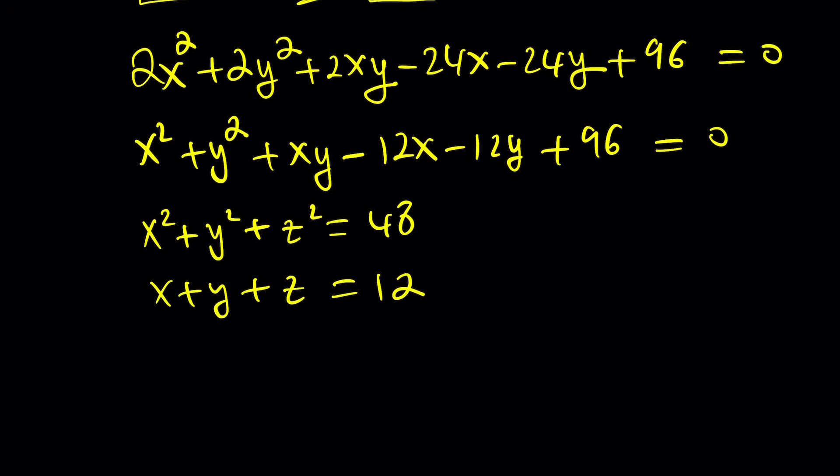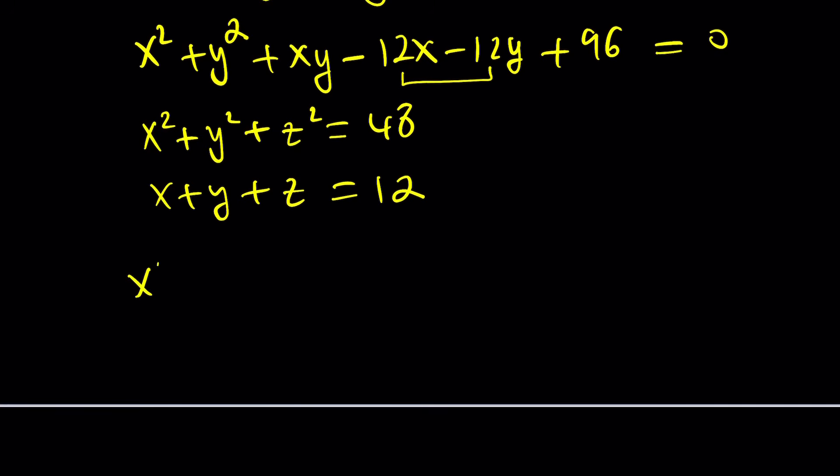Let's see how I can use this. First of all, I do see a 12 here, which might be helpful. And I can factor out a negative 12 times x plus y. So let's try that. x squared plus y squared plus xy minus 12, which will be replaced with x plus y plus z, times x plus y, and then plus 96. And that is equal to zero. Let's go ahead and distribute this and see if that's going to give us anything helpful.